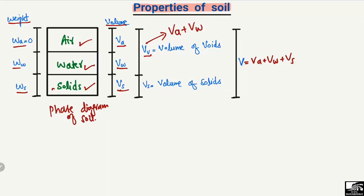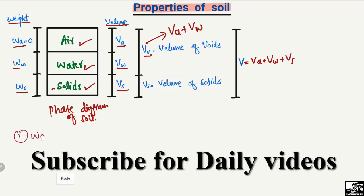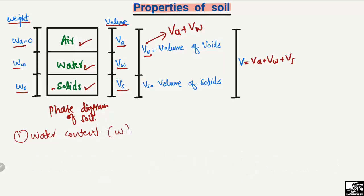Now to define the different properties of the soil, first we take the water content, represented by w. Water content is equal to the weight of water (Ww) divided by the weight of solids (Ws). If we know the weight of water in our soil and divide it by the weight of the solids, we get the water content of the soil. You can then multiply it by 100 to get the water content in percentage.